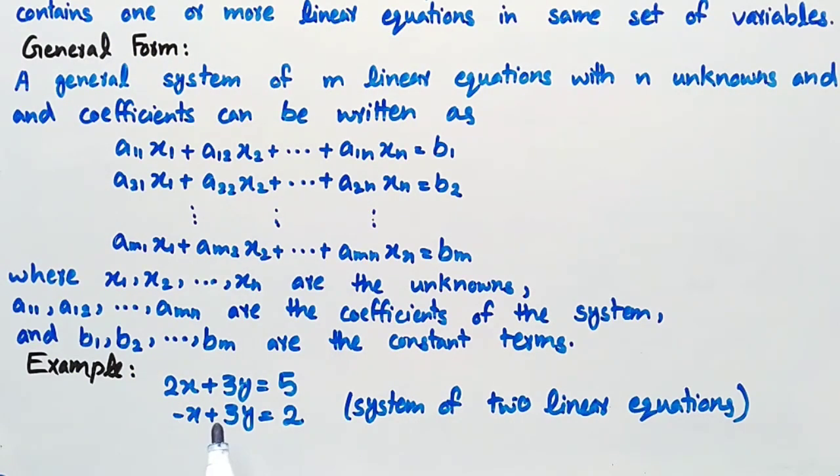2x plus 3y equal to 5, minus x plus 3y equal to 2. This is an example of a system of two linear equations.